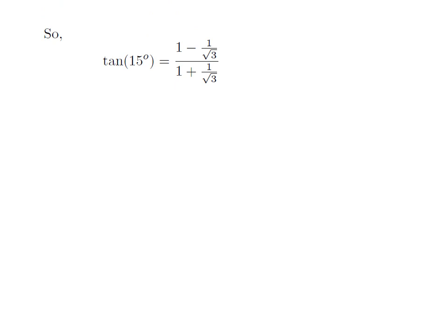So, tan of 15 degrees is equal to 1 minus 1 by square root of 3 in the numerator, and in the denominator it is 1 plus 1 into 1 by square root of 3, which becomes 1 plus 1 by square root of 3.